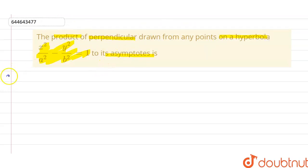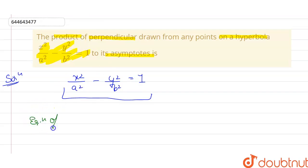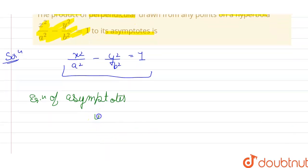So first, the equation of the hyperbola is x²/a² - y²/b² = 1. This is the general equation of a hyperbola. Then the equation of asymptotes — we know that the asymptotes are y = ±(b/a)x. So we have two equations: y + (b/a)x = 0 as the first equation, and y - (b/a)x = 0 as the second equation.